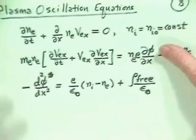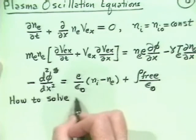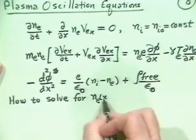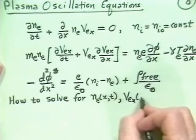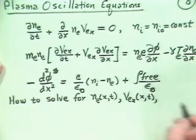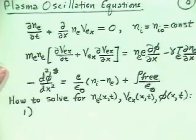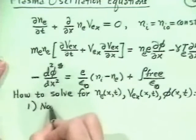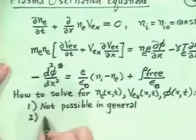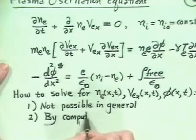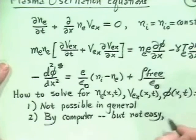Can we solve these equations? We need to solve for n_e(x,t), v_ex(x,t), and φ(x,t). In general, it's not possible to obtain a regular analytic solution easily — you can solve it by computer, but there's no simple physical interpretation that way. So we need a better approach.